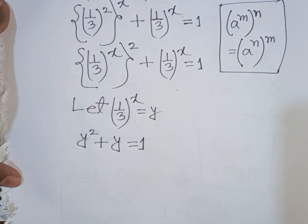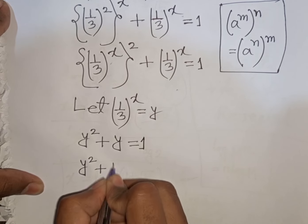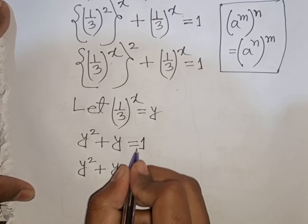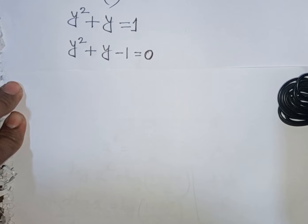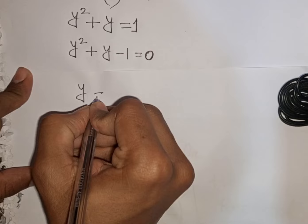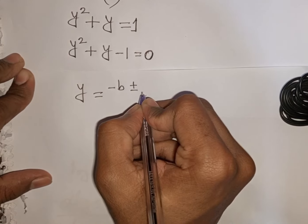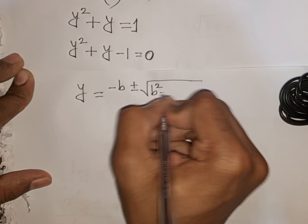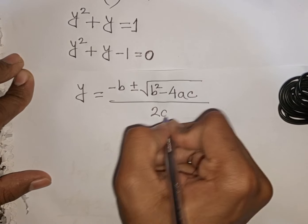Rearranging: y² + y - 1 = 0. We apply the quadratic formula: y = (−b ± √(b² − 4ac)) / (2a).